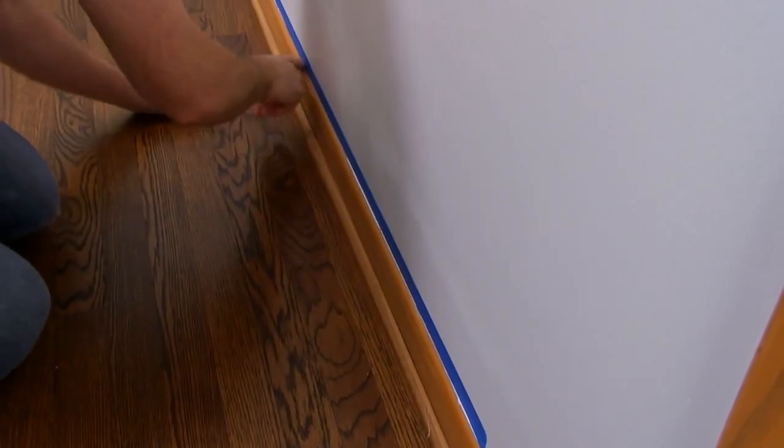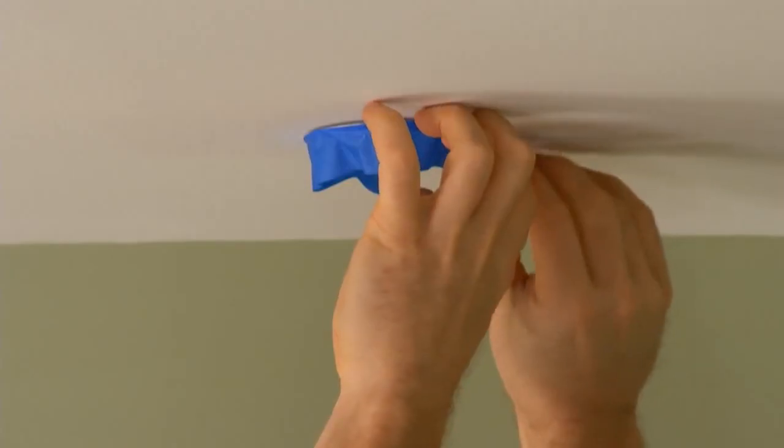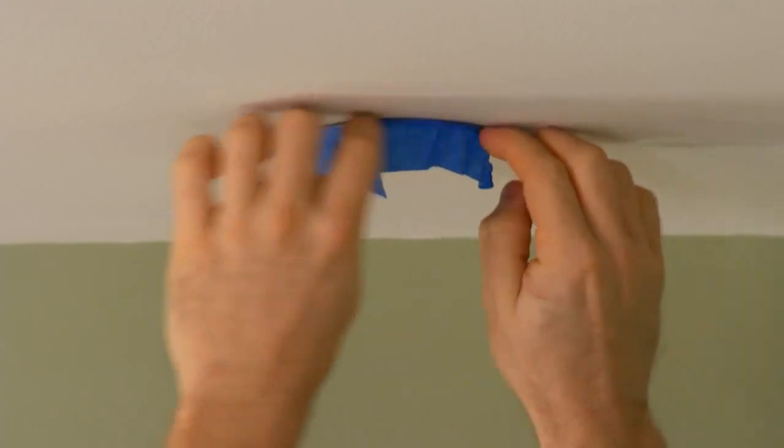It's a good idea to protect your doorknobs, fixtures, outlets, and light switches, as these areas tend to collect unwanted paint while you're working.